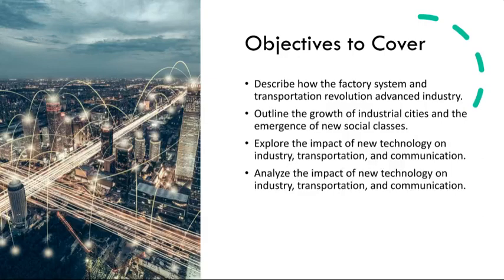Moving on to the growth of industrial cities and the emergence of new social classes. The concentration of factories and industries led to the rapid growth of urban areas. Cities expanded, attracting a massive influx of rural dwellers seeking employment in factories. This migration from rural to urban areas resulted in overcrowded, often unsanitary living conditions in rapidly growing industrial cities.